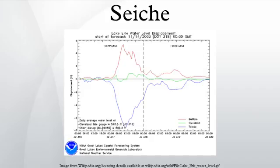In 1954, Hurricane Hazel piled up water along the northwestern Lake Ontario shoreline near Toronto, causing extensive flooding, and established a seiche that subsequently caused flooding along the south shore. Lake seiches can occur very quickly. On July 13, 1995, a large seiche on Lake Superior caused the water level to fall and then rise again by 3 feet within 15 minutes, leaving some boats hanging from the docks on their mooring lines when the water retreated.